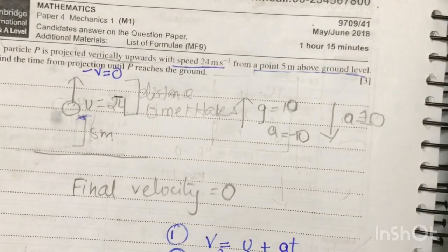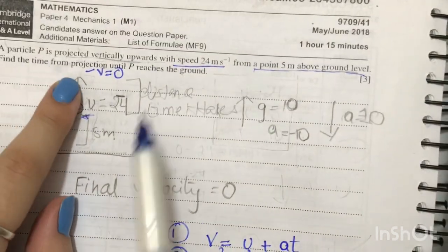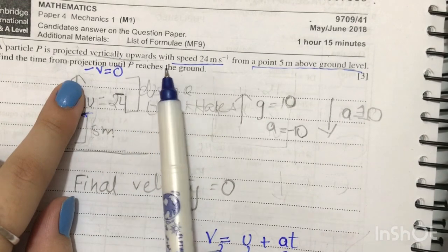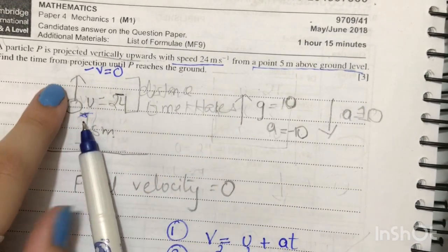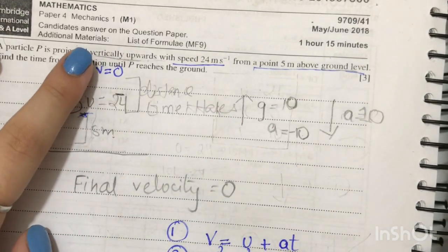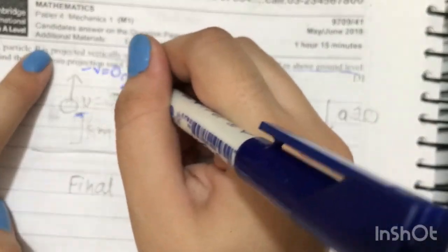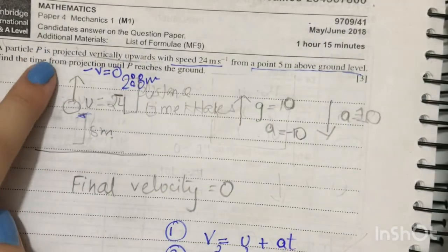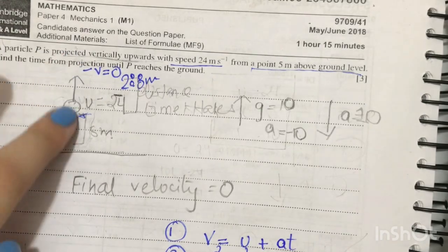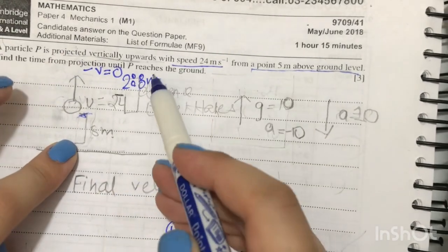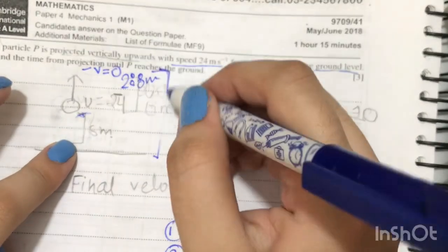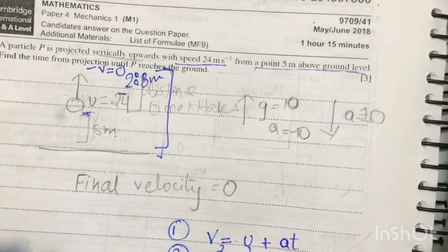So now when we go back to the question, it says we need to find the time from projection until P reaches the ground. Now we know that the particle has reached its maximum height and it has traveled 28.8 meters. So now for it to reach the ground, it will need to cover this whole distance which is 28.8 plus 5.